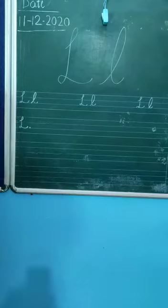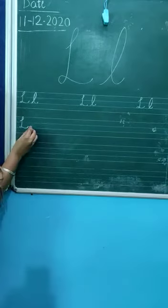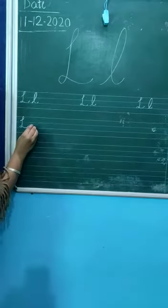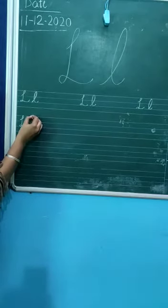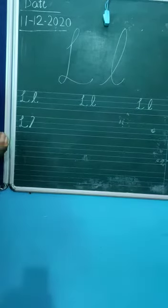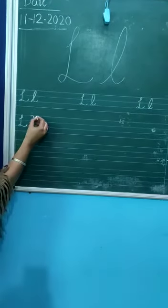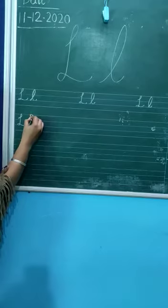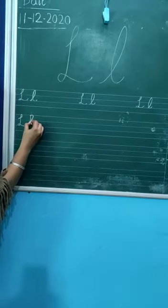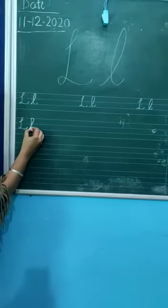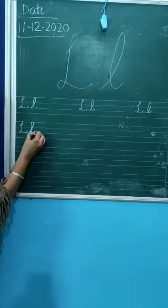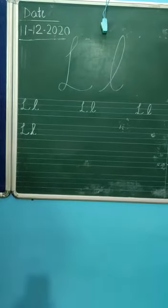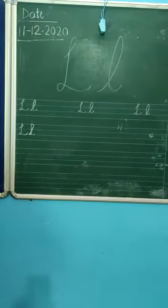Start from the third line, slanting line upward, then back curve, standing line downward, and a small curve. Small letter L.